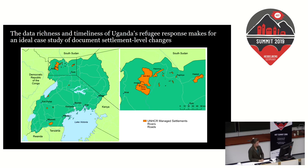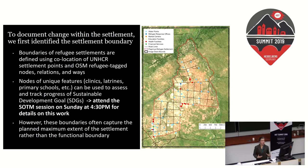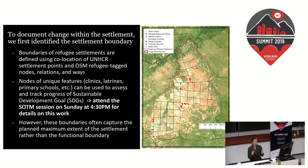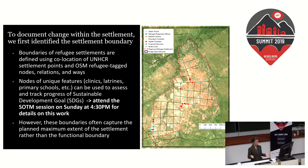This is a map of the different refugee settlements in Uganda. To document change within a settlement, you first have to identify the settlement boundary. The refugee settlement boundary layer in OSM has been a really critical component — knowing where to get imagery and beginning with a delineation of what the settlement could be. In addition to boundaries, there are also unique nodes such as clinics, latrines, primary schools, and wash points, which are informative for understanding the context of the settlement and what services are available.